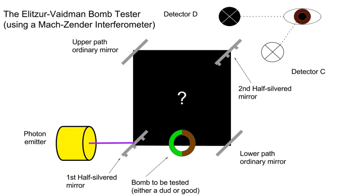The bomb in question is placed inside the box beforehand on the lower path. If it's live and comes into contact with a photon, it will detonate and destroy itself and the photon. If the bomb is a dud, the photon passes it by and continues along the lower path. A pair of ordinary mirrors, located on each path, are positioned to redirect the photon so that the two paths intersect at the second beam splitter. A pair of photon detectors are located outside the box, aligned with the second beam splitter. The photon can be detected at either or neither, but never both.